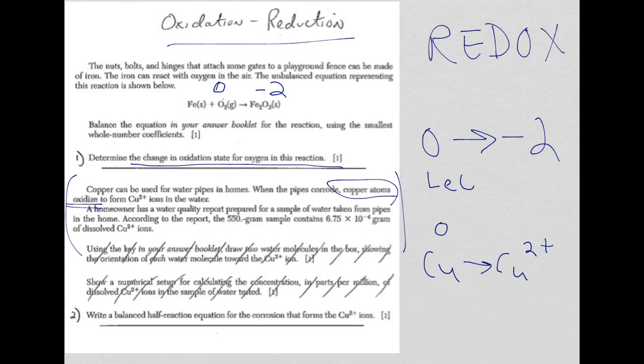loss of electrons is oxidation. Gain of electrons is reduction. Leo goes ger. So, if it's losing electrons, it means that electrons are a product. How many is it losing? It's going from a zero to a plus two. So, it's losing two electrons.